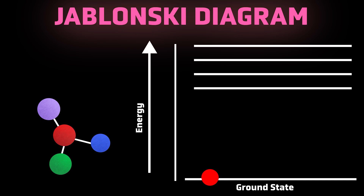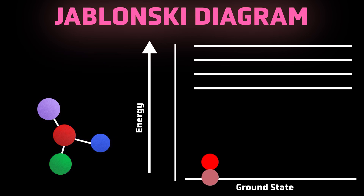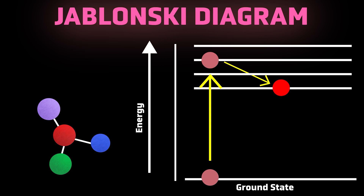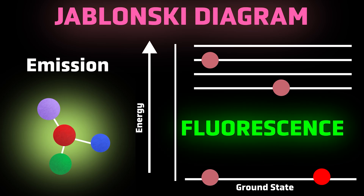At its core, fluorescence occurs when molecules absorb higher energy light, such as ultraviolet light, causing their electrons to enter an excited, unstable state. The excited electrons release some vibrational energy, or heat, until reaching the lowest excited state. Finally, the molecule must return to its stable ground state. When a fluorophore re-emits the remaining energy as a photon, it is called fluorescence.